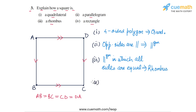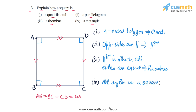Finally, in part 4, we have to explain why a square is also a rectangle. A rectangle is a parallelogram in which all angles are 90 degrees. That is also true for a square — in a square, all four angles at the four vertices are equal to 90 degrees. Hence, all angles in a square are 90 degrees, which means a square will also be a rectangle.